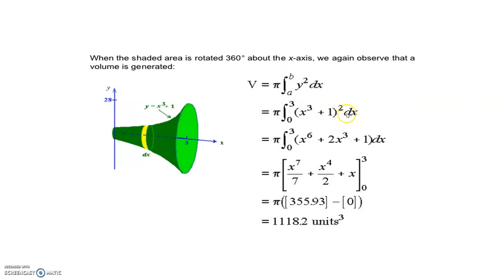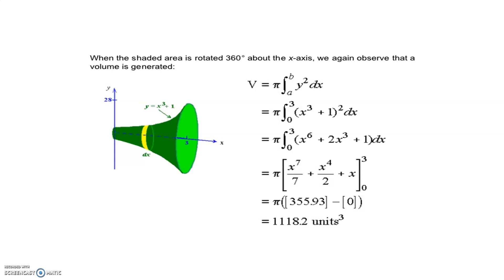Example: V equals pi times integral from a to b of y squared dx. The equation given is y equals x cubed plus 1. We expand (x cubed plus 1) squared using a squared plus 2ab plus b squared: this gives x raised to 6 plus 2x cubed plus 1. Then we integrate: x raised to 7 upon 7 plus x raised to 4 upon 2 plus x, with upper limit 3. We derive pi times 355.93 minus 0. Using pi equals 22/7 or 3.14, the final answer is 1118.2 cubic units.